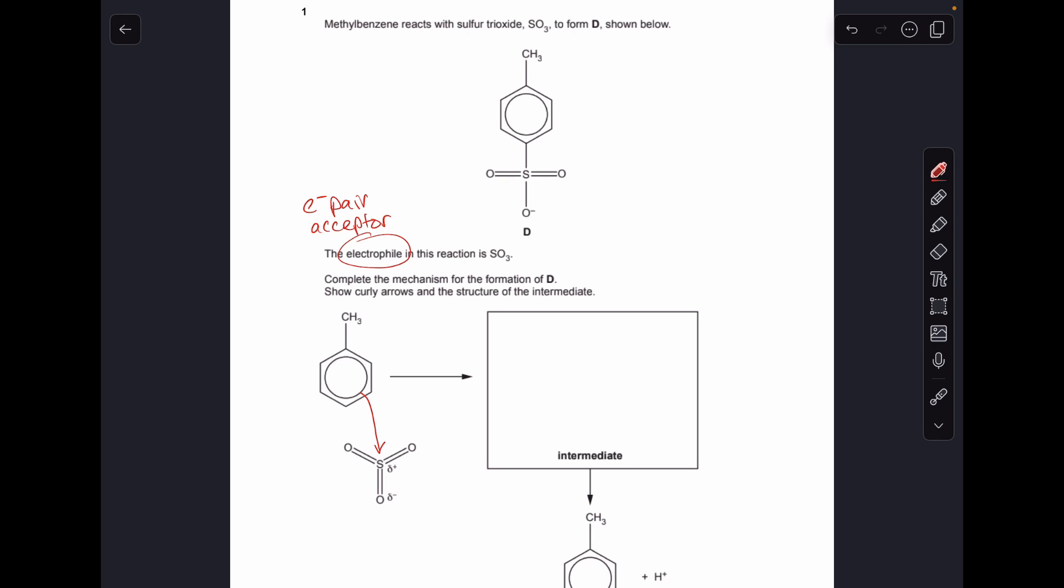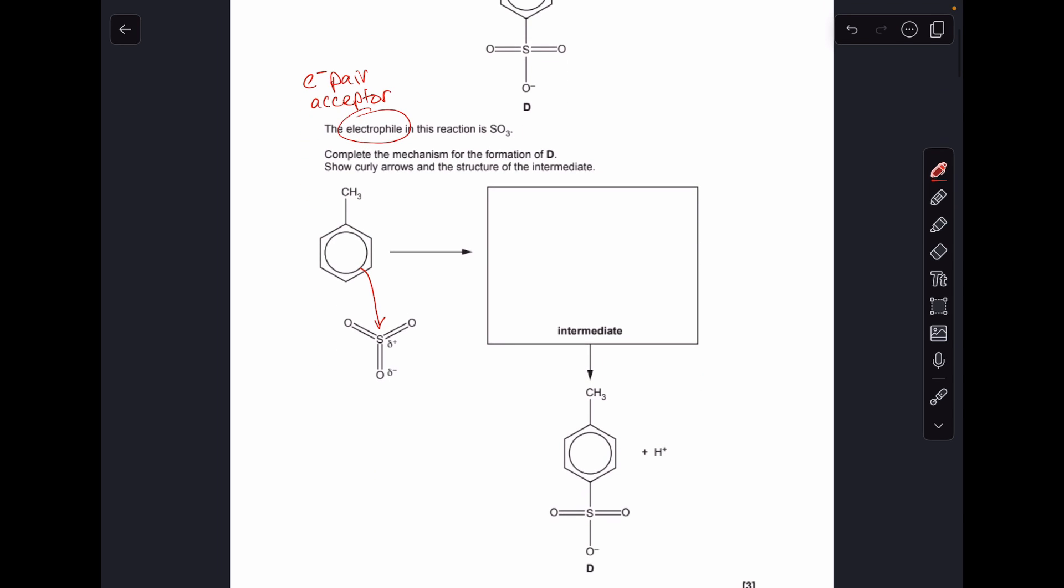To that slightly positive sulfur. And if you have a look at the product you can see that this double bond in the SO3 molecule has become a single bond with an O- on it.